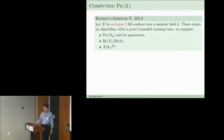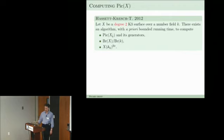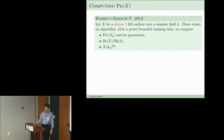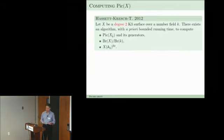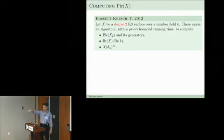In theory, here is a recent result: for a K3 surface of degree two — a double cover of P2 ramified in a sextic — over a number field, you can compute with a priori bounded running time: first the Picard lattice together with generators, also the Brauer group used in arithmetic applications, and also the kernel for the Brauer-unobstructed adeles. Now what is the method? To compute the Brauer group, we take random fibrations — fibers over P1, hyperplane sections — and use descent on those curves or their Jacobians.